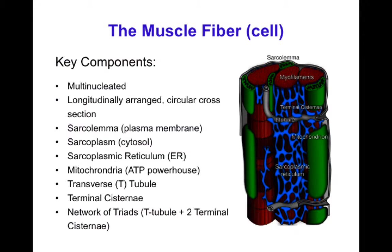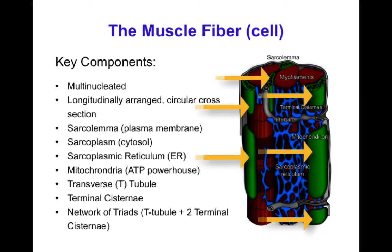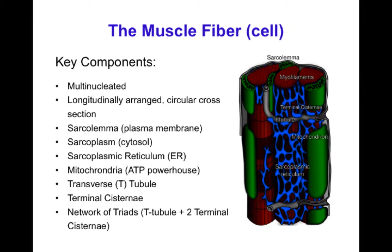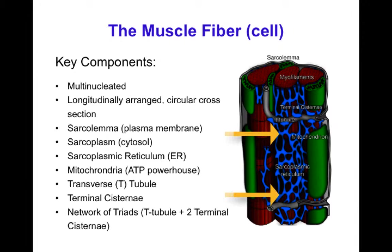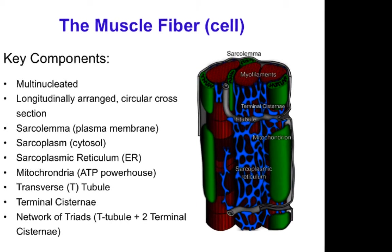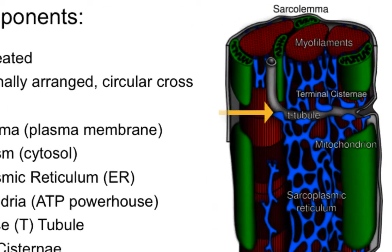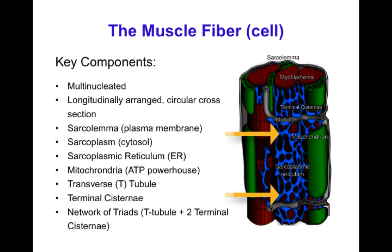Other important structures in the muscle cell include mitochondria, which are mostly localized under the membrane and between the myofibrils. Invaginations of the membrane called T tubules go deep into the myocyte — inside the T tubule is actually extracellular space. The sarcoplasmic reticulum includes the junctional sarcoplasmic reticulum, very close to the T tubules, and the network sarcoplasmic reticulum spread around the myofibrils. There is a lot of mitochondria in muscle, particularly heart muscle, because muscle does a lot of work and needs to generate a lot of ATP.